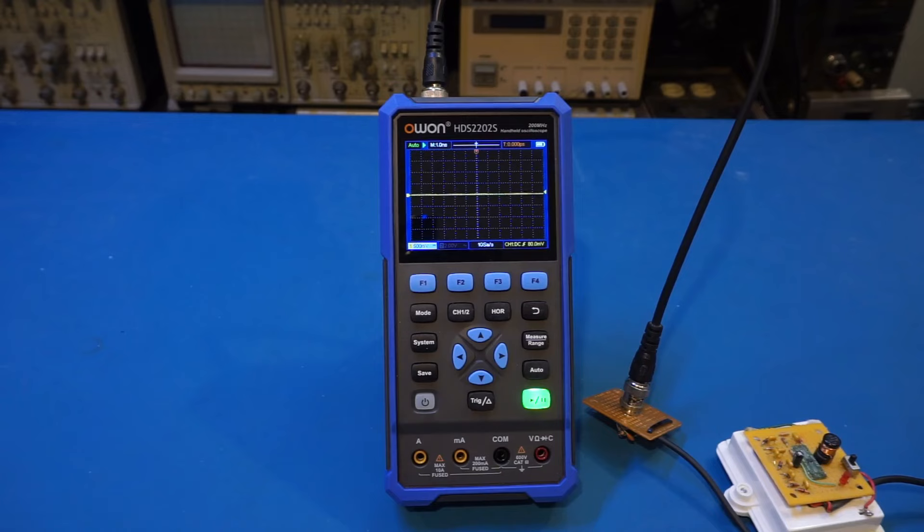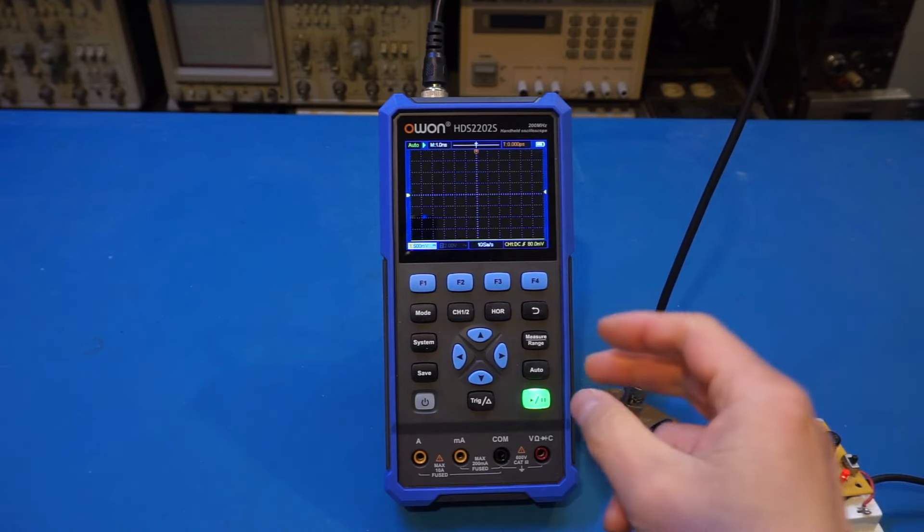Now let's actually try to determine the bandwidth of the scope using an avalanche pulse generator. Avalanche pulse generators have very fast rising edge. And for all intents and purposes, the pulse generator's rise time can be ignored when doing our measurements. The scope's bandwidth then can be inferred from the rise time measurements. It's 350 over the rise time in nanoseconds. So let's turn on the pulse generator and let's acquire the signal.